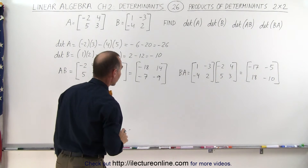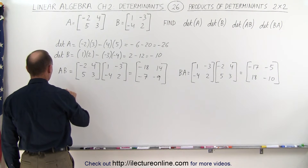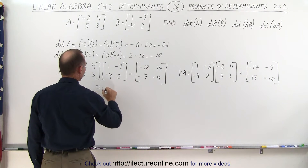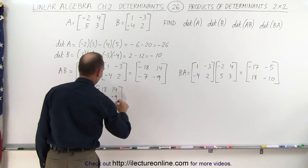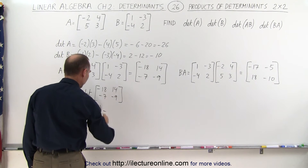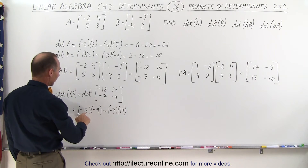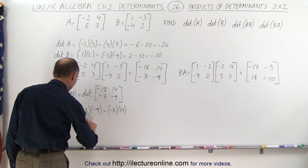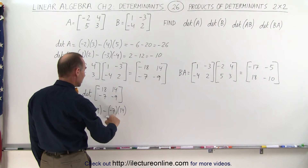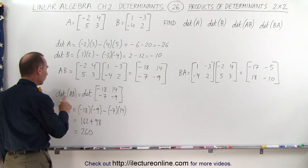Now we're going to find the determinant of AB, which is equal to the determinant of that product matrix with elements minus 18, 14, minus 7, and minus 9. That equals the product of the main diagonal, minus 18 times minus 9, minus the product of the other diagonal, minus 7 times 14. That's positive 162 plus 98, because minus times minus is plus, giving us 260. So the determinant of A times B is 260.